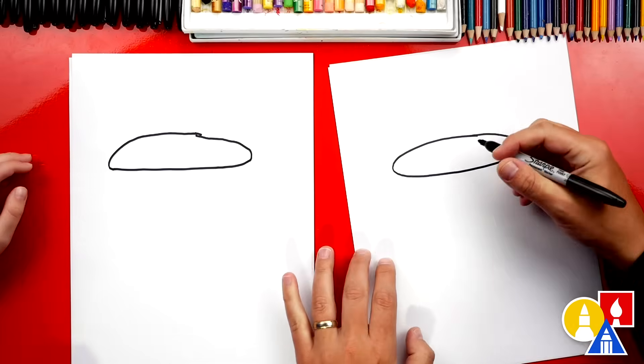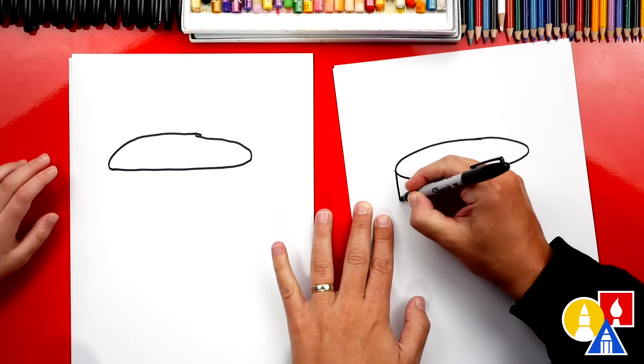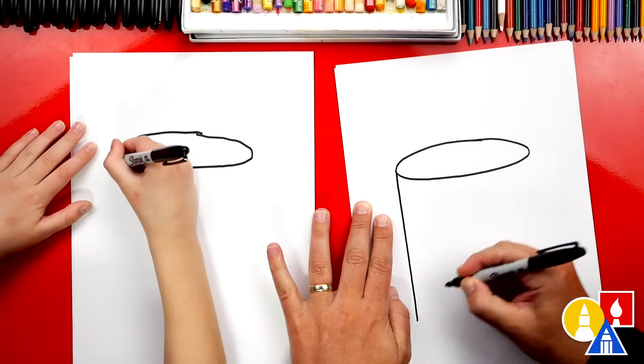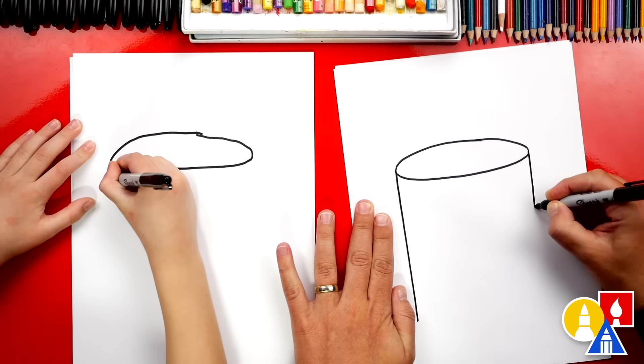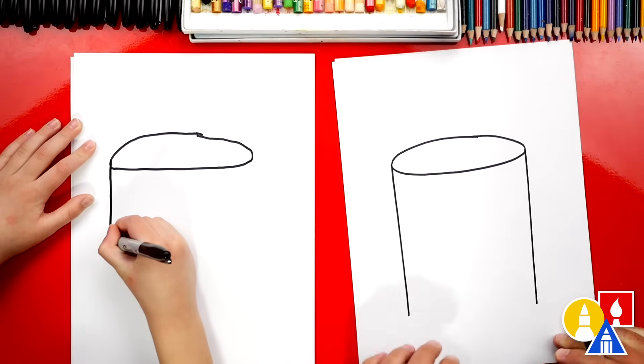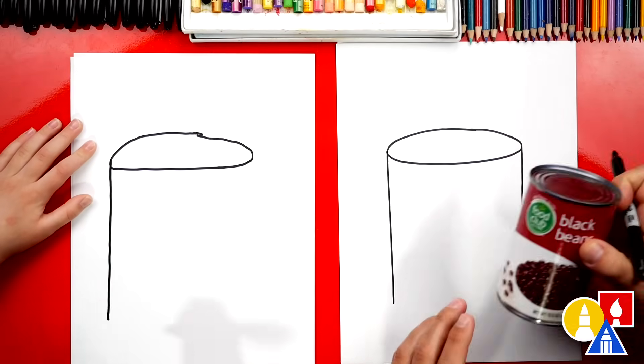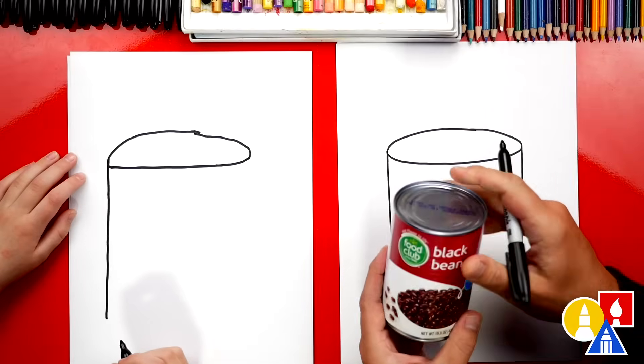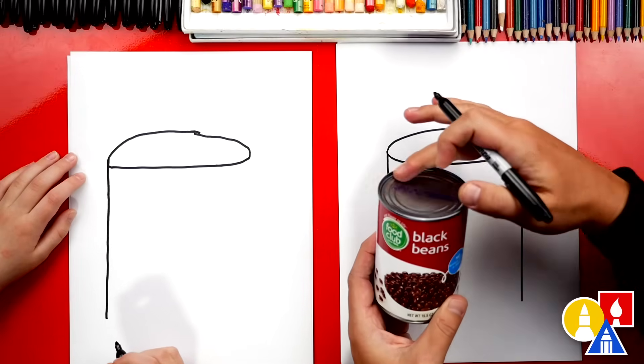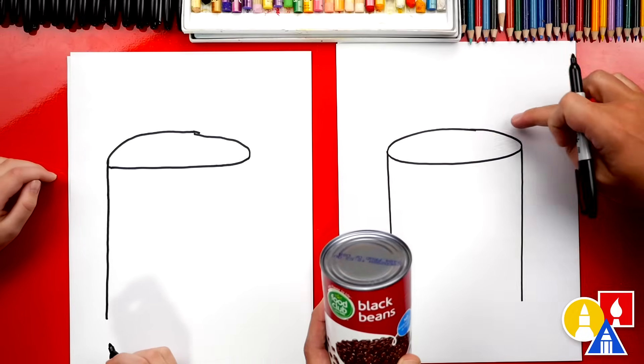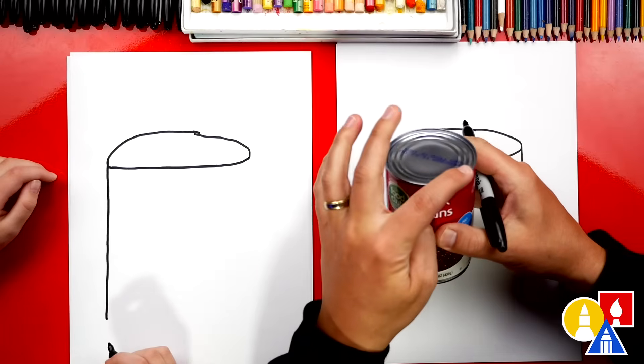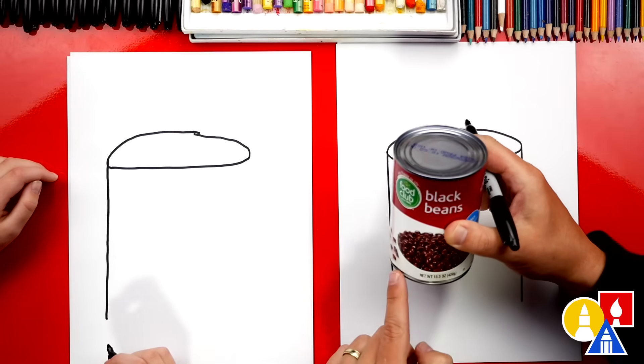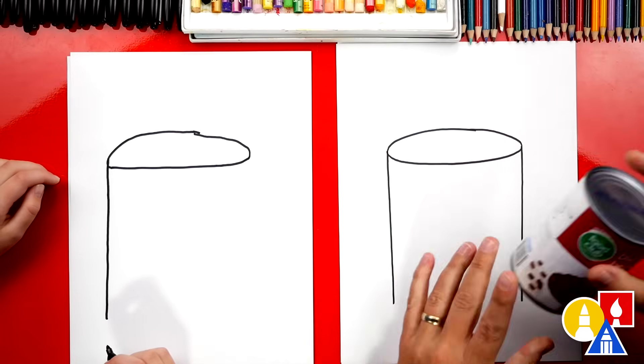Now we're gonna draw the sides of our can. We're gonna draw vertical lines coming all the way down. Well, not all the way to the bottom of our paper, but really far down our paper. So that's the side of our can coming down. Then we're gonna match. Look at this. So the top of the can, see how it's curved? Like our oval right here.